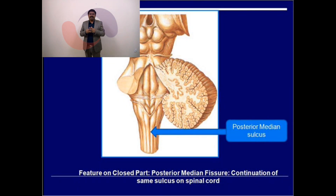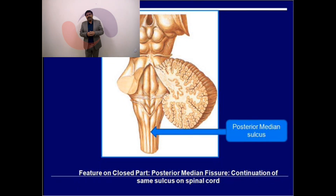The hypoglossal triangle is medial to the vagal triangle. It appears pale in color and its apex points downward. Deep to the hypoglossal triangle lies the hypoglossal nucleus, which supplies the muscles of the tongue.